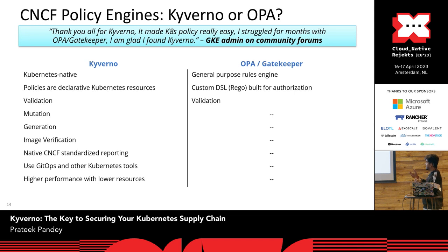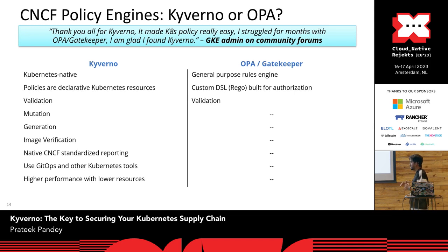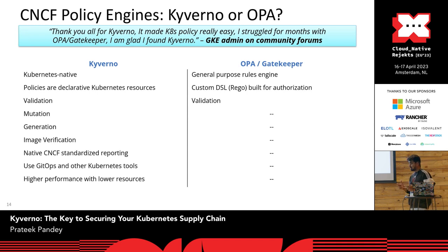Kyverno has validation, mutation, and generation — features that OPA doesn't support. Image verification is one of the good features that comes with Kyverno, using which you can achieve supply chain security and SecOps goals. It's a CNCF project. Kyverno also supports a reporting mechanism using CIS benchmarks to generate reports that you can analyze.